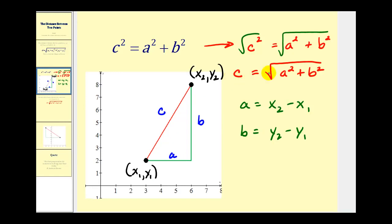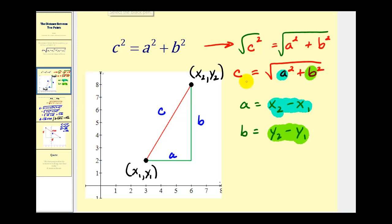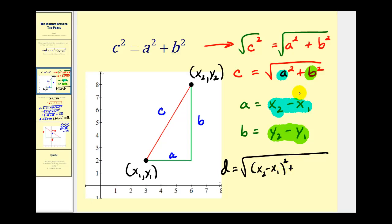So the only difference between the Pythagorean theorem solved for c and the distance formula is we're substituting x sub two minus x sub one for a, and y sub two minus y sub one for b. If we perform these substitutions, we'll have the exact distance formula shown on the previous screen. Instead of c, we'll use d for distance, giving us d equals the square root of the quantity x two minus x one squared plus the quantity y two minus y one squared.